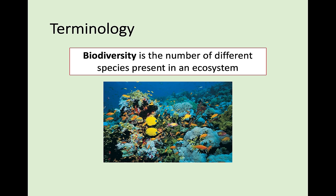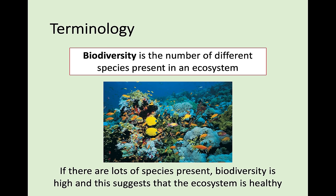The first part we're going to be looking at is the term biodiversity. Biodiversity is the number of different species present in an ecosystem, and we can use this to classify how species-rich an area is. For example, if there are a lot of different species present — plants, animals, fish, whatever it may be — biodiversity is said to be high, and this suggests that the ecosystem is very healthy.